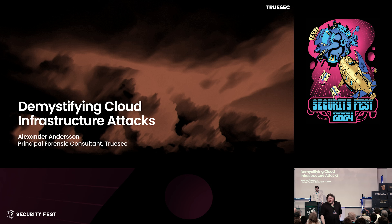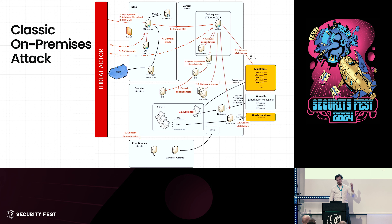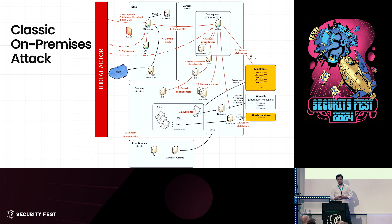I'm going to talk about mystifying cloud infrastructure attacks. The background is an attack that looks something like a typical classic on-premises attack — actually like a red team we did way back. Most of the attacks I investigate, as a forensic investigator at TrueSec, look something like this, and it's pretty often the on-premises environment that's hit. The question is: what does it look like when it's in the cloud? That's what we're going to figure out today — drawing the kind of map we saw for a classic on-premises environment, but for the cloud.